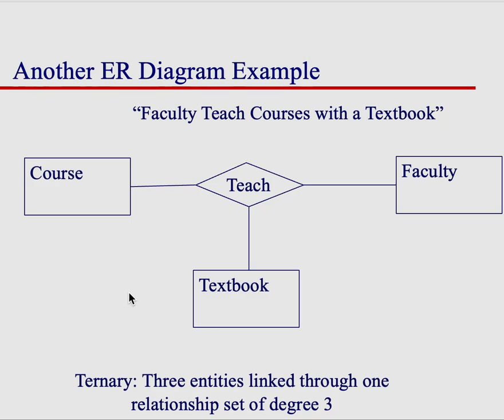While you might think these are binary relationships, or they could be depicted as such, really they're all connected. If you want to keep track of a textbook, you can't say that all faculty use the same textbook — it might be different in a course. You can't even say that all courses use the same textbook, because it might be different depending on who's teaching the class. I might choose one textbook, and another professor teaching database management systems might choose another textbook.